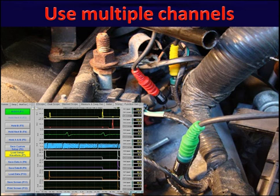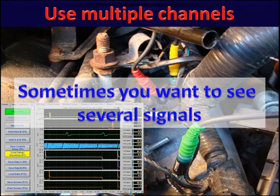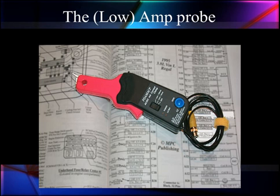Sometimes to do this, you'll use scopes with multiple displays — three, four, or some scopes like this one have as many as eight different channels at one time. Sometimes you just want to see more signals or several signals at the same time to compare them. Next, we're going to talk about the low amps probe, because we're going to be using it to answer the problem we just had and bring us back to diagnosing that circuit. We're going to use amps because it checks a number of things at one time.